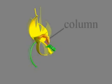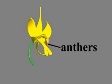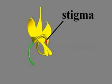The column contains the reproductive organs. The tip of the column contains the anthers, hidden under a cap, while the stigma is on the underside of the column behind the anthers.